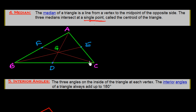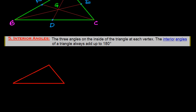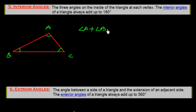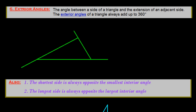Now I explain the interior angles. The three angles on the inside of a triangle at each vertex are called interior angles. The interior angles of a triangle always add up to 180 degrees. So angle A plus angle B plus angle C is equal to 180 degrees. We will prove this in our forthcoming sessions.